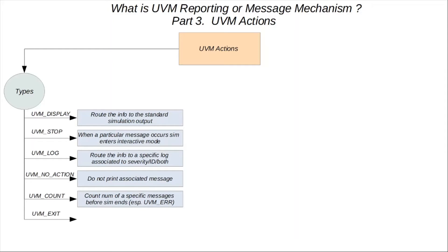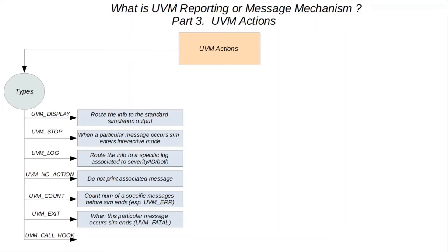Next up are the callback functions, called UVM_CALL_HOOK. This is basically a callback mechanism used whenever there is a need to change the message content or its severity. A good example would be to change the severity of a UVM_FATAL message to an error, and also change the message content to indicate that it used to be a fatal error.